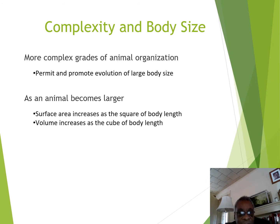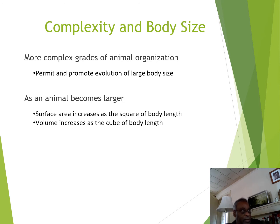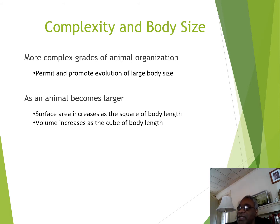There are a lot of advantages to the evolution of larger body sizes. As an animal gets larger, its surface area increases as the square of its body length, but its volume increases as the cube of its body length. This means that its volume gets larger faster than its surface area, and that has a lot of implications as to how the animal evolves and what processes it evolves.